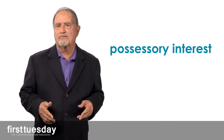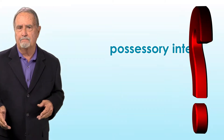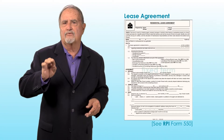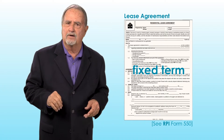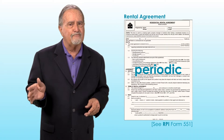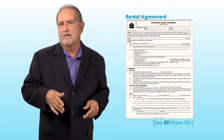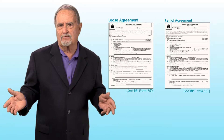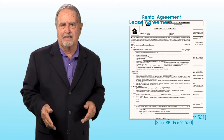Tenancies are created when the landlord or the tenant enter into a rental or lease agreement that conveys a possessory interest in the real estate to the tenant. What's the difference between a lease and a rental agreement? Well, a lease is for a fixed term, say one year. A rental agreement concerns a term that is not fixed but periodic. Both create a leasehold estate held by the tenant.